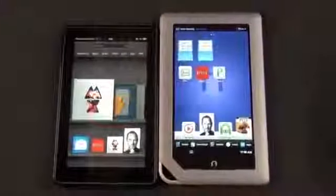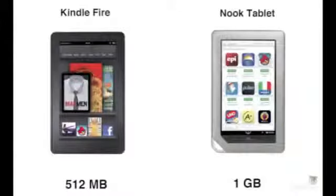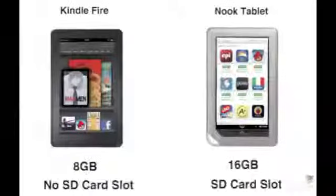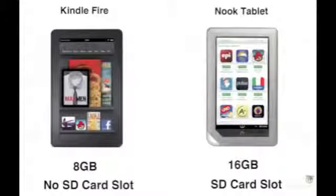Looking at the specs, both devices use the same TI 1 GHz dual core OMAP processor. But the Kindle Fire has 512 MB of RAM while the Nook Tablet gives you 1 GB of RAM. Storage on the Fire is 8 GB with 6 GB available to the user, and on the Nook we have 16 GB of storage but only 1 GB available to the user. Unlike the Kindle, the Nook gives you the option to expand storage thanks to a micro SD card slot.